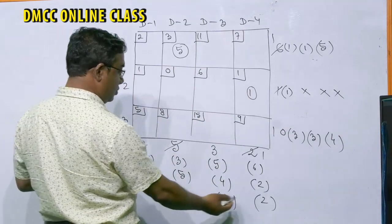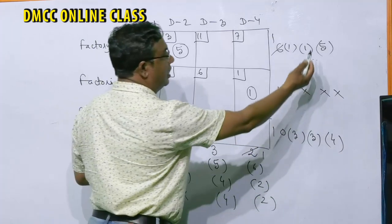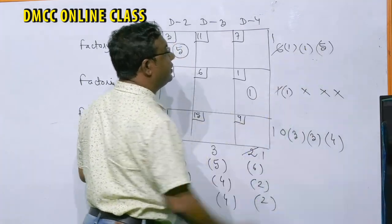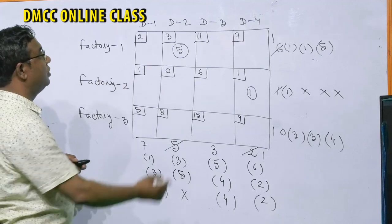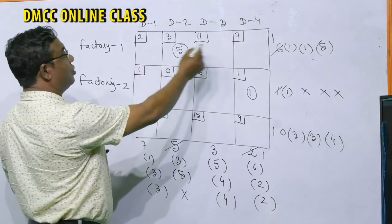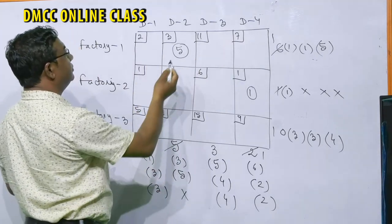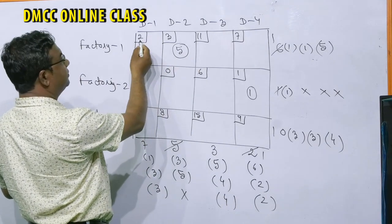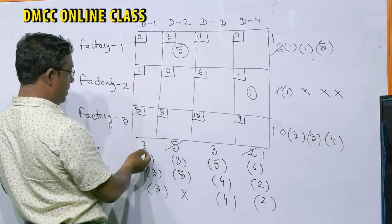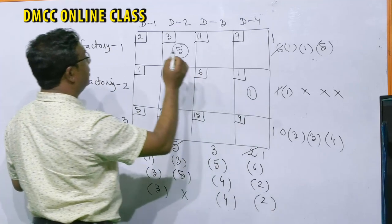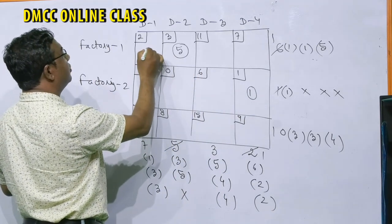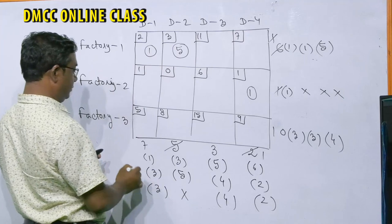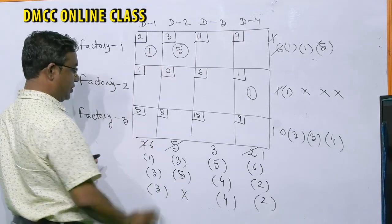Select row one with greatest difference 5. The smallest cost in row one is 2 (destination one). Supply remaining in row one is 1, demand for destination one is 7, so allocate 1. Row one is now exhausted — cross it out. Remaining demand for destination one is 6.